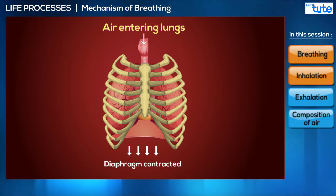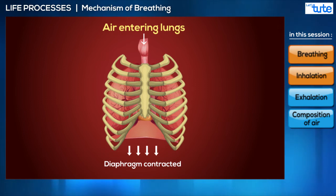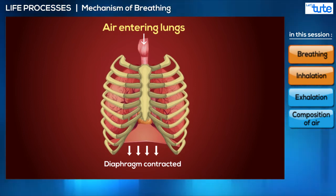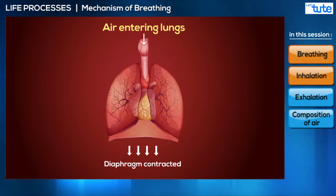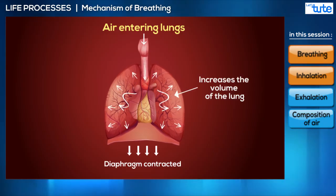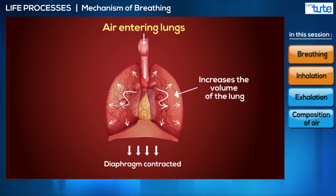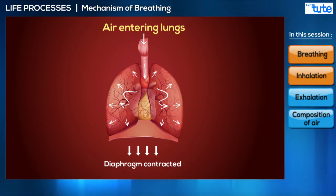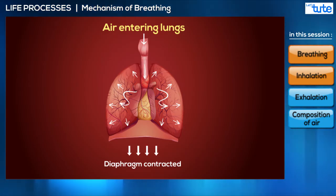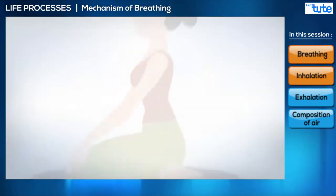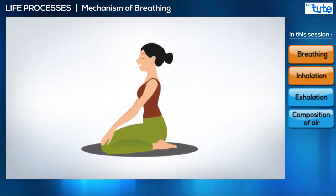The ribs are not sealed bones but a cage-like structure with gaps to allow expansion. All of this increases the volume of the lungs, decreasing the pressure inside. The decreased pressure draws air into the lungs. The outside air is at a higher pressure, so it rushes inside the body to equalize the pressure.